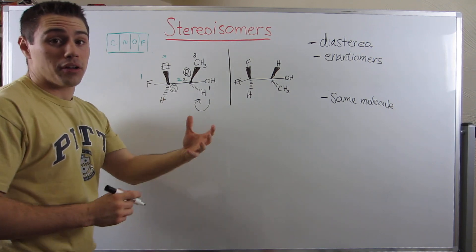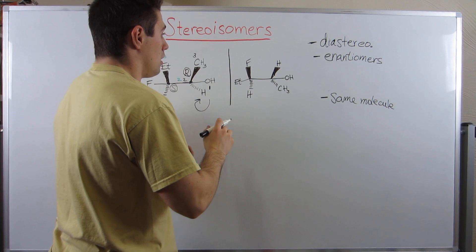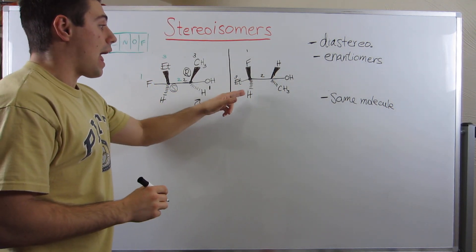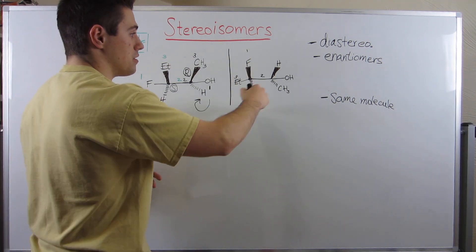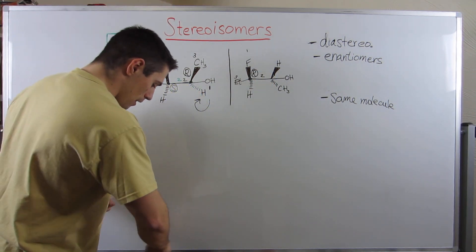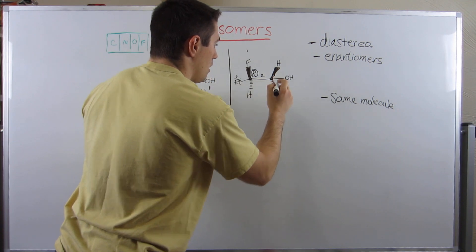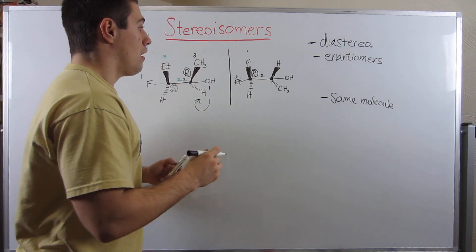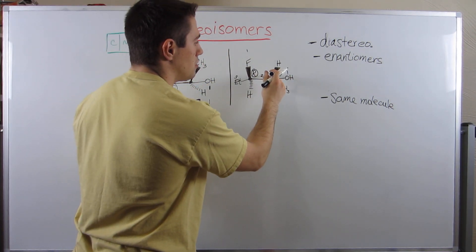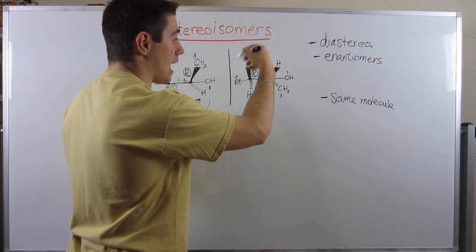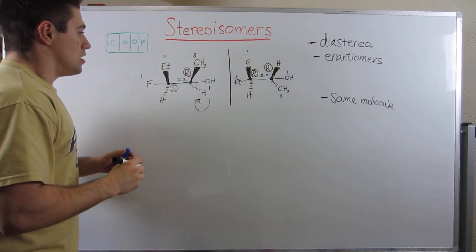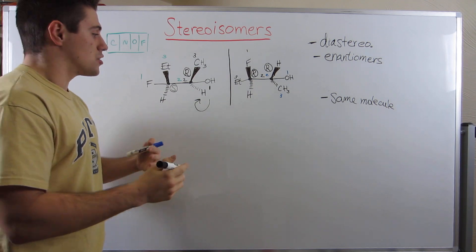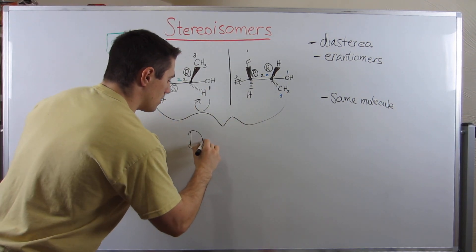Let's assign R and S on this structure, compare the two, and see which label is appropriate. Let's go with this stereocenter first. Fluorine is number 1, this carbon is number 2, ethyl group would be 3. We still have the hydrogen dashed, so we can straight up assign. We're going this way - looks like this carbon is an R. Now let's look at the other stereocenter. We see that the hydrogen is pointing directly at us, so we can assign and then take the opposite stereochemistry. The OH would be number 1, the group to the left would be number 2, methyl group would be 3. This looks like S, but it's actually R.